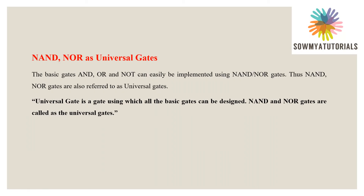NAND and NOR are called universal gates. The universal gate is the gate using which all the basic gates can be designed. The basic gates AND, OR, and NOT can be easily implemented using either a NAND or a NOR gate. Thus, NAND and NOR gates are called universal gates.